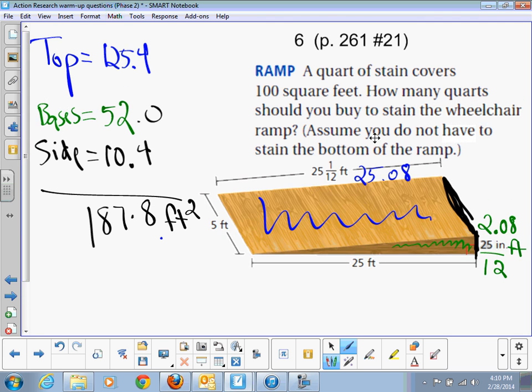But we want to figure out how many quarts should we buy. Well, if one quart covers 100 square feet, and we got just shy of 200 square feet, so we better buy two quarts. Two quarts because that will cover 200 square feet.